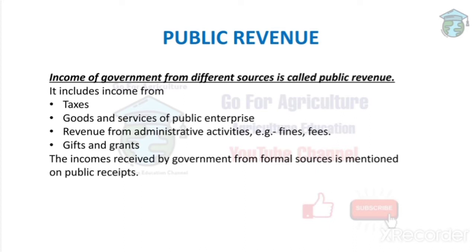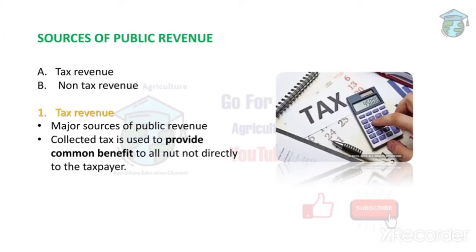The income that the government gets is called public revenue, and this income is used for public expenditure only — for the common benefit, like building roads or helping people. So next, let's look at the sources of public revenue.